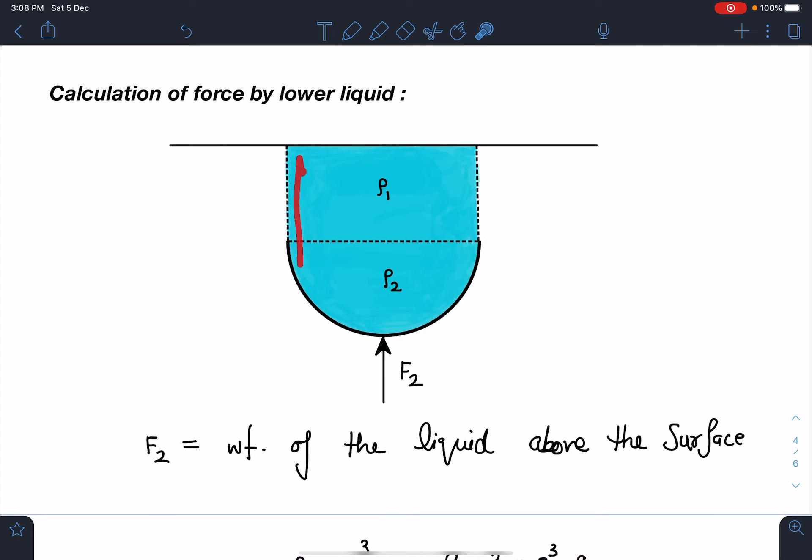We have to use original configuration of the liquid here. You will find there is a layer of length r or depth r having density of rho 1, and similarly here there is another layer which was having depth of r with density rho 2.